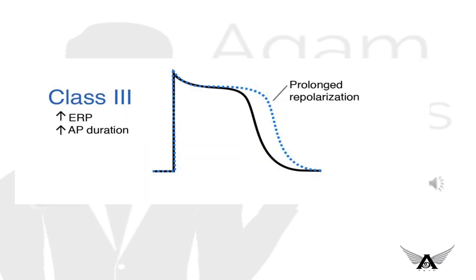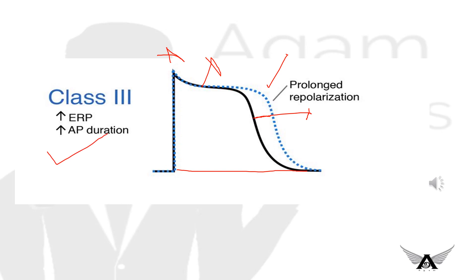For Class 3 drugs, looking at the action potential graph: phase 0 — no change; phase 1 — no change; phase 2 — no change; phase 3 — yes, change. Potassium outflux is blocked, so phase 3 changes, causing prolonged repolarization. Since the action potential is affected, the QT interval increases, and ERP also increases.